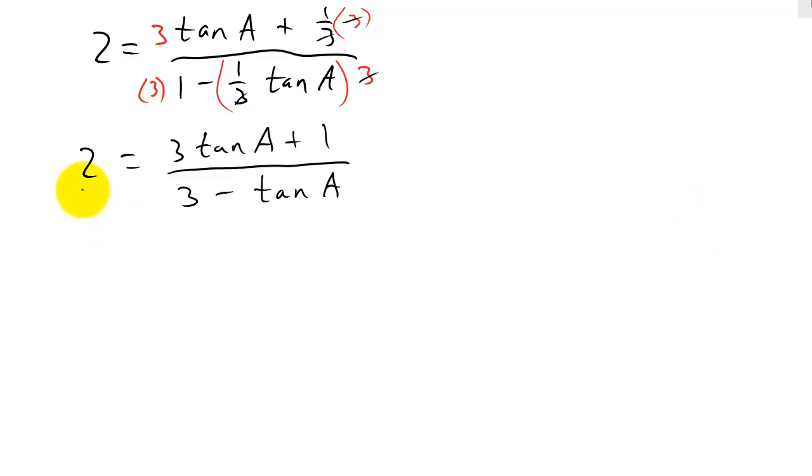All right, so here, remember what we can do here, we can cross multiply. So that's going to give me 2 times 3 minus tangent A equals, and then 1 times this is just going to give me 3 tangent A plus 1.